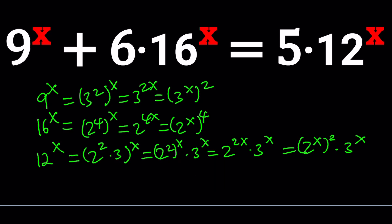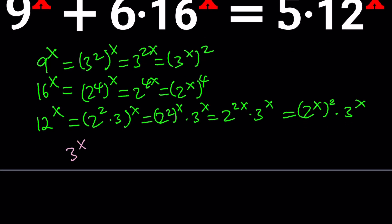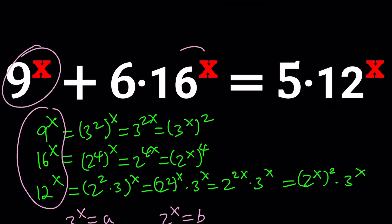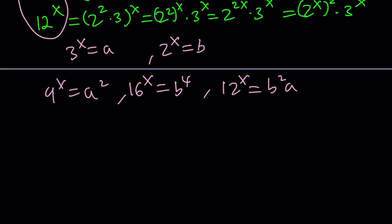Let's call 3 to the power x equals a and 2 to the power x equals b. So we can express each one of these in terms of a and b. 9 to the x is just a squared, 16 to the x is b to the 4th power, and 12 to the power x is a times b squared. Now let's plug these into our original equation which gives us a squared plus 6b to the 4th power equals 5b squared a.